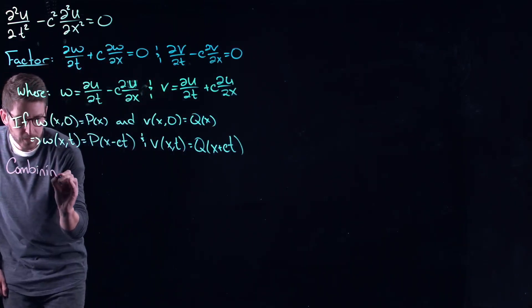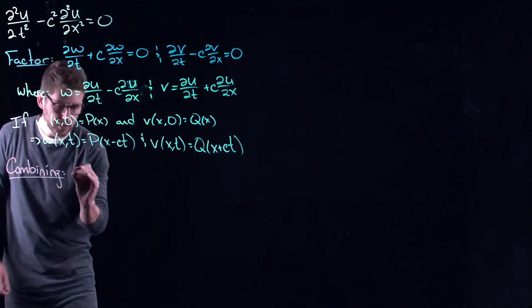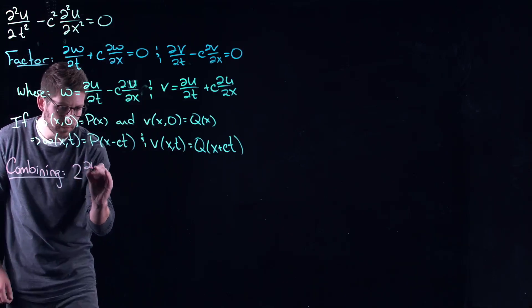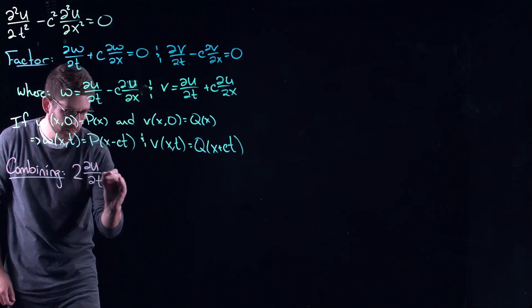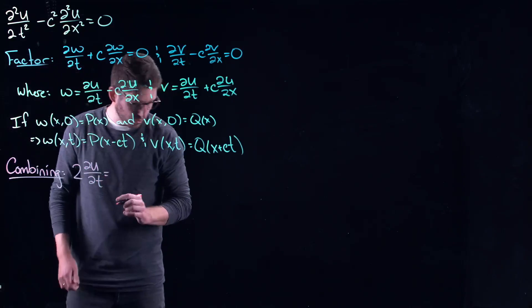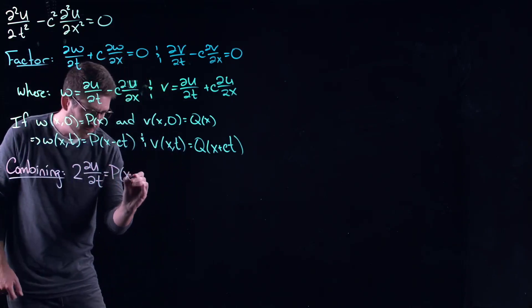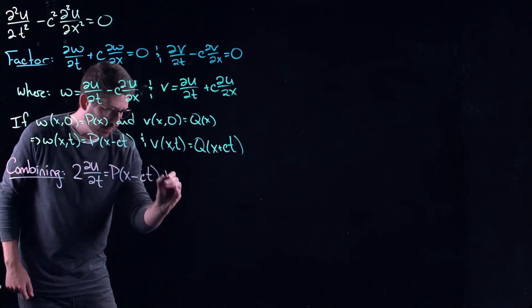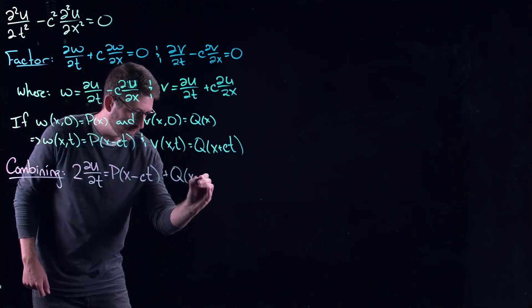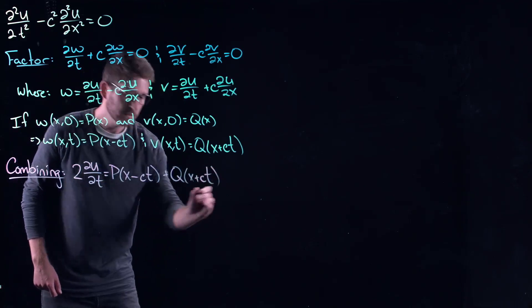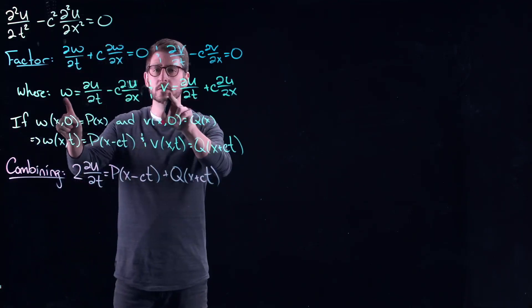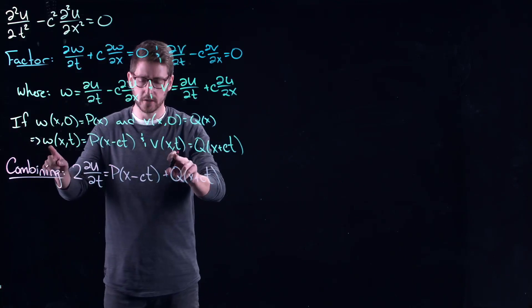So combining these things. Now, I'm going to let you fill in the gaps here. I want you to think about this. But you get two times the partial derivative of u with respect to t equals p of x minus ct plus q of x plus ct, right? Just add these two equations together and use the fact that you know what w and v are.